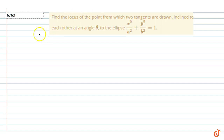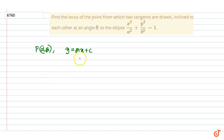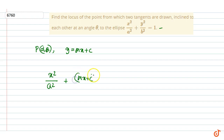Let the point be P(α, β) and let the equation of the tangents drawn through (α, β) be y = mx + c. Since y = mx + c is a tangent to this ellipse, we can write x²/a² + (mx + c)²/b² = 1.